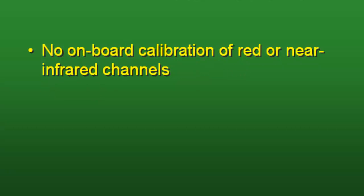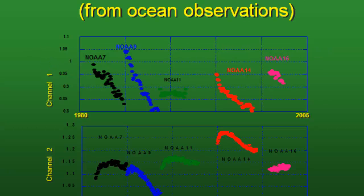Another problem is there's no onboard calibration of the red or near-infrared bands. There will be some calibration drift that occurs naturally over time and we don't know exactly what that drift is because there's no onboard sensor calibration. Here's an example of the decay of spectral response: starting at NOAA-7 AVHRR and over time the spectral response declines, then NOAA-9 launches and its spectral response also declines in the red band. We have this degradation of spectral response with no onboard calibration to correct for it.